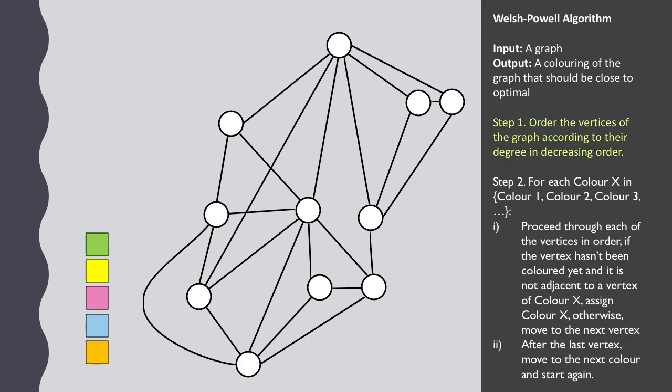We need to order the vertices from the highest to lowest degree first, so let's calculate the degree at each of the vertices by counting the number of edges going in or out.